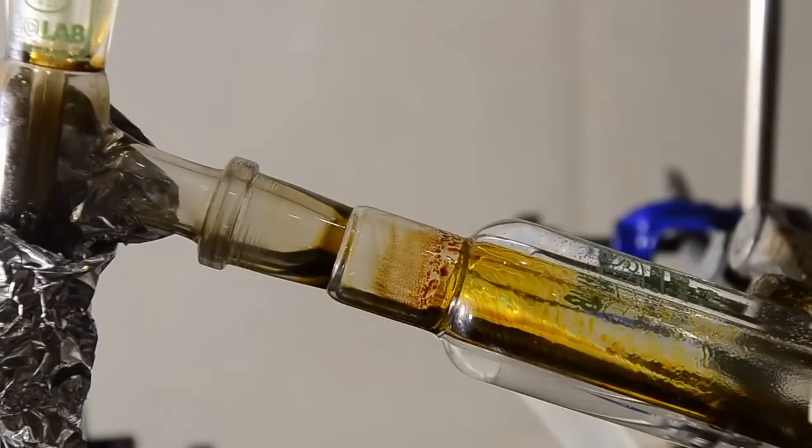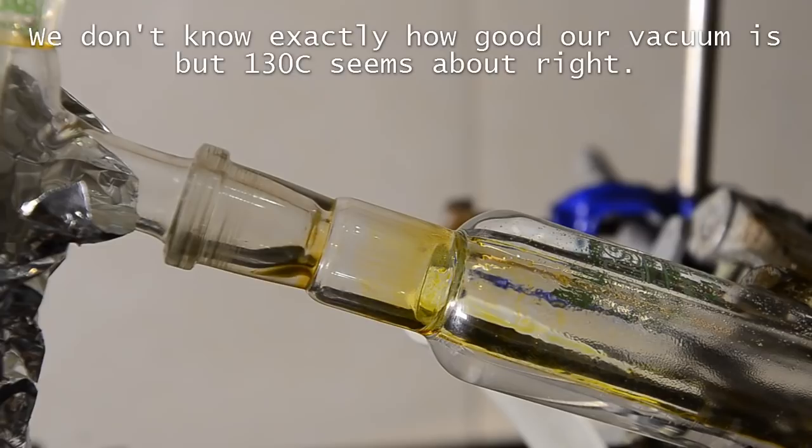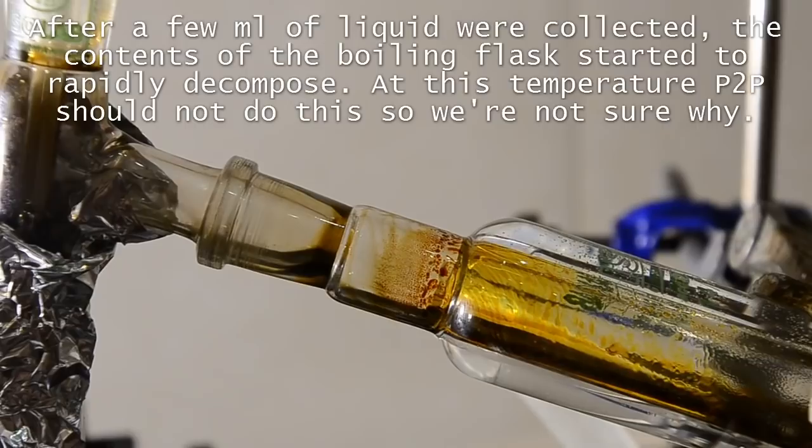Then the temperature rose and the yellow oil remaining in the flask began to distill at around 130 degrees C. We collected a small amount, but then problems struck. Decomposition. The contents of the boiling flask started to turn black. We salvaged the oil collected to that point and stopped distillation.